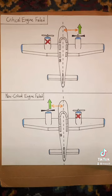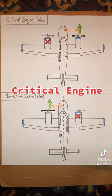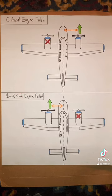This greater yawing when the left engine fails is why the left engine is considered the critical engine, as its failure results in more difficulty controlling the aircraft than if the non-critical engine failed. Multi-engine airplanes with propellers that rotate in opposite directions do not have a critical engine.